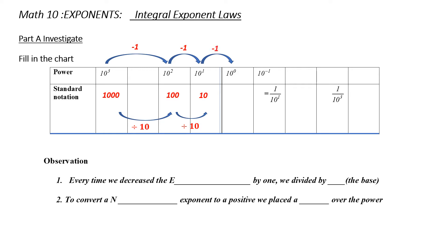Continuing the pattern: subtract 1 again, giving 10 to the 1, which is 10 — dividing by 10. Subtract 1 again giving 10 to the 0; divide by 10, and 10 divided by 10 is 1. Anything to the 0 power is 1, which we learned in Lesson 1. Now subtract 1 again: 0 minus 1 is negative 1, so we now have 10 to the negative 1. Dividing by 10 gives 1 over 10 to the 1. A negative exponent seems to give a number less than 1.